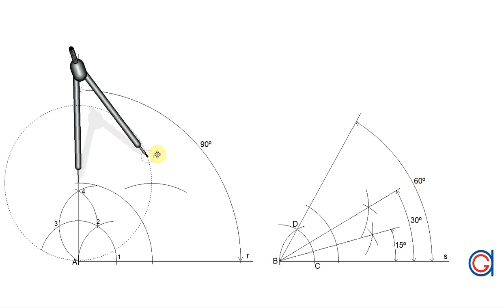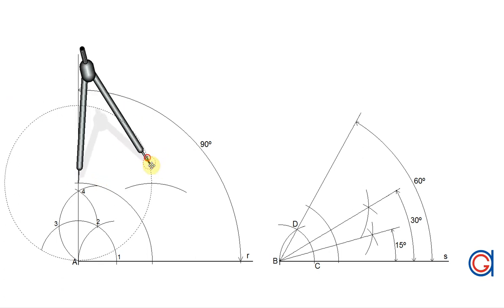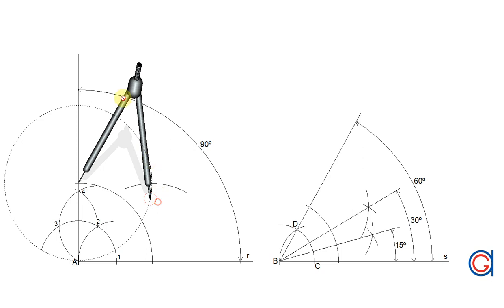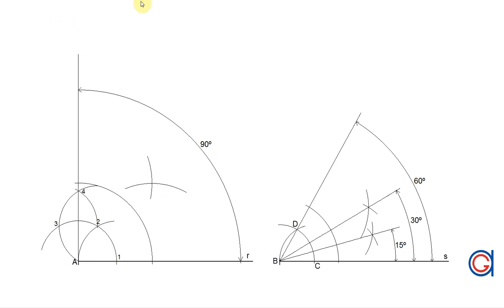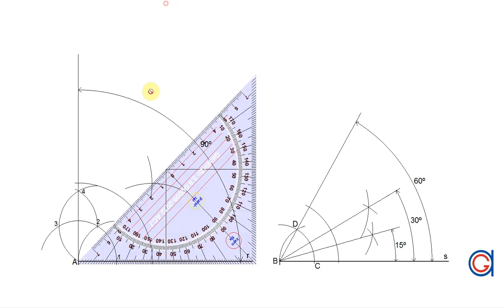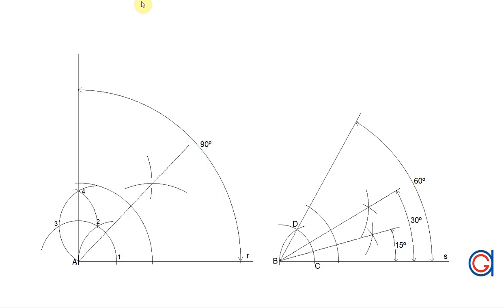Now our second arc footing our previously drawn arc, and finally we join this new intersection to A — this is our angular bisector of the 90 degrees which forms a 45 degree angle.